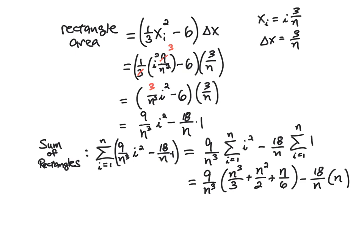The formula for the sum of i² from 1 to n is n³/3 + n²/2 + n/6. The sum of ones from i = 1 to n is simply n. So substituting these in gives us the full expression for the sum of all the rectangles, Rₙ.